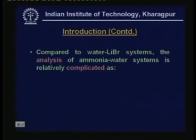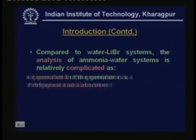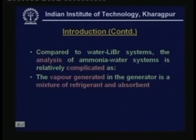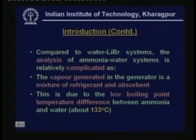However, compared to water lithium bromide systems, the analysis of ammonia water systems is relatively complicated. The complication comes because the vapor generated in the generator is a mixture of refrigerant and absorbent. The reason for this is the low boiling point temperature difference between ammonia and water, which is about 133°C. In water lithium bromide systems, the boiling point temperature difference between absorbent and refrigerant is very high, so in the generator the amount of absorbent is practically negligible — the generator exit produces pure water vapor, so you have pure refrigerant circulating in the refrigerant circuit.